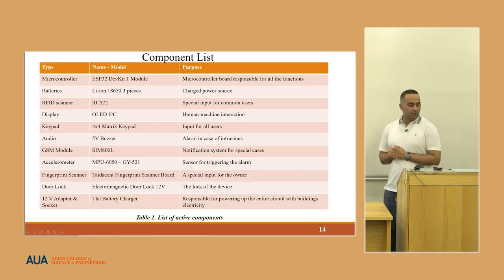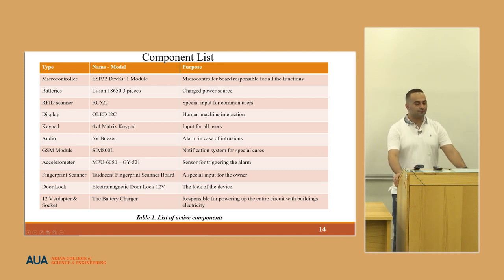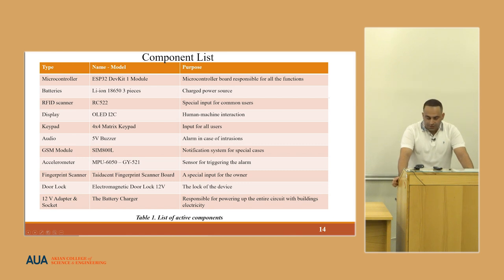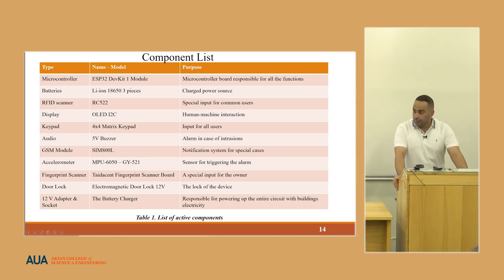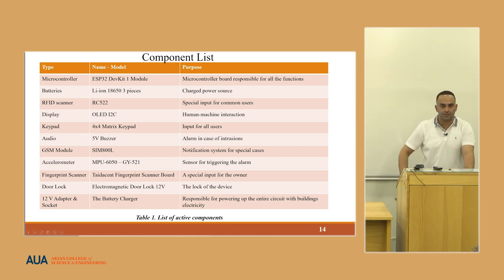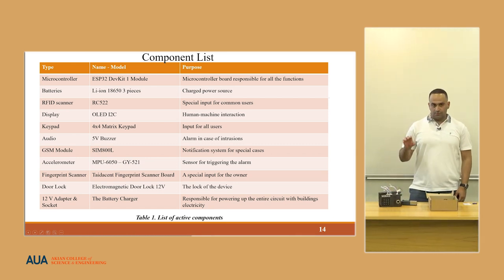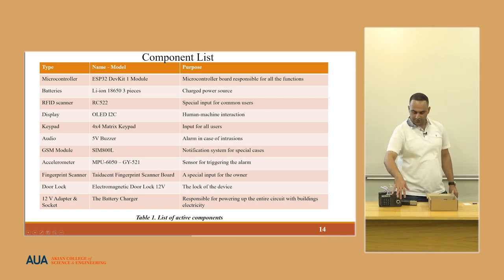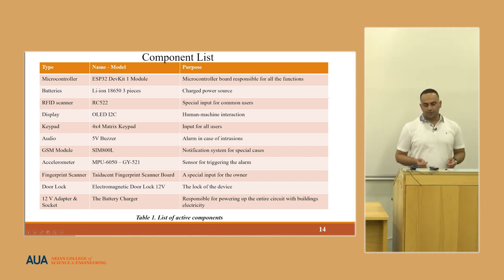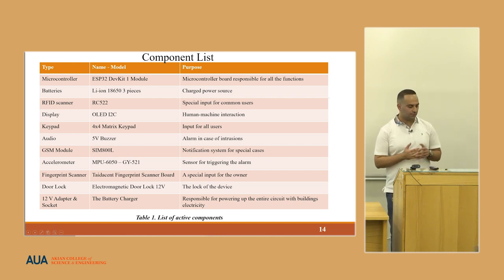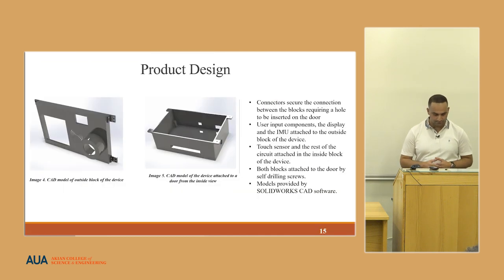The component list includes: an ESP32 microcontroller, three lithium-ion batteries, an RFID scanner, an OLED I2C display, a 4x4 keypad, a 5V buzzer, a GSM module, an MPU-6050 GY-521 accelerometer (IMU), a fingerprint scanner — a PCB ordered from abroad with an integrated relay — an electromagnetic door lock, and an adapter and socket for charging.